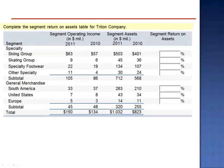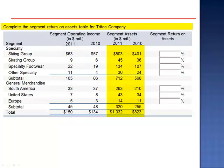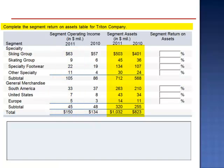Exercise 14. We're asked to complete the Segment Return on Assets table for Triton Company. We're given information about the segment's operating income and their assets as of the beginning of the year and the end of the year. To calculate return on assets, we take net income and divide by average assets.